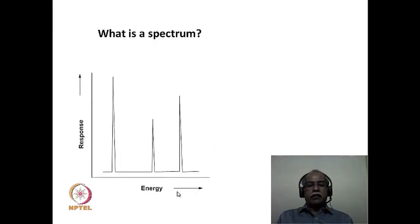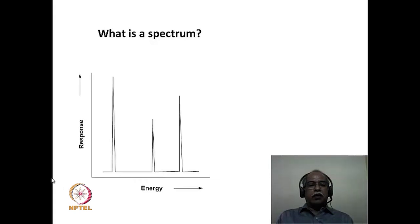What is a spectrum? A spectrum is essentially a plot of energy on the x-axis and the response received from the sample on the y-axis. The energy is that of the electromagnetic radiation being applied, and the response is recorded in terms of absorbance, transmittance, emission intensity, or scattering intensity. The peaks normally seen in a spectrum are due to the intensities of absorption, transmittance, emission, or scattering plotted against the energy of the electromagnetic radiation.